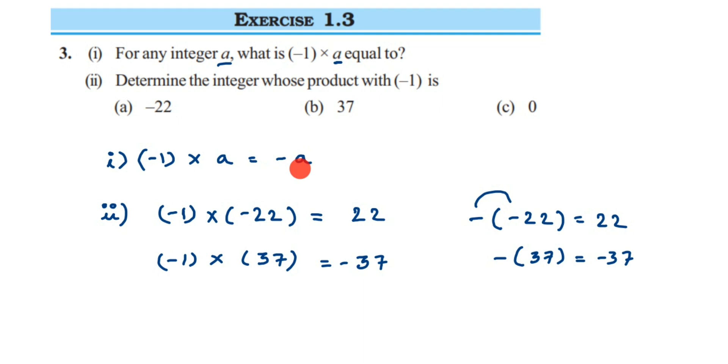The next one is (-1) into 0. It will be 0, because whenever you multiply any number with 0, you will get the answer 0.